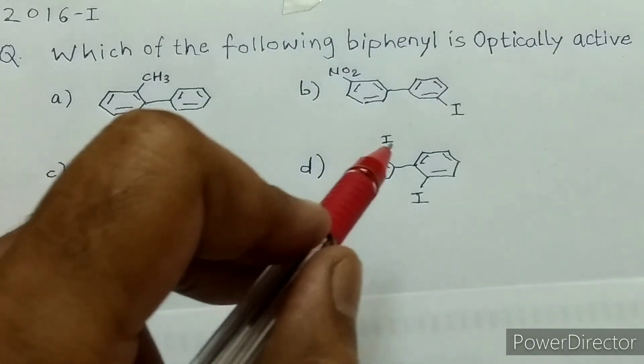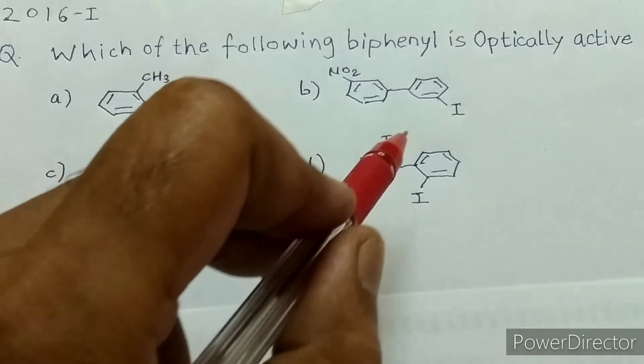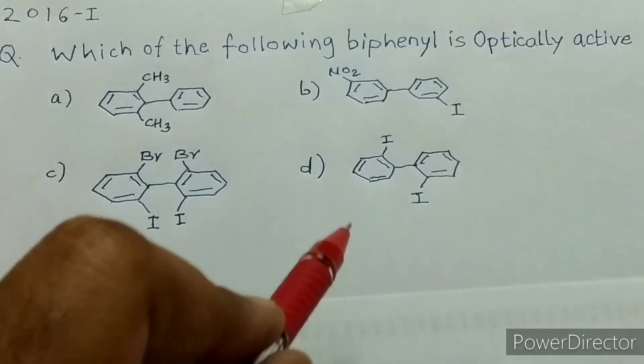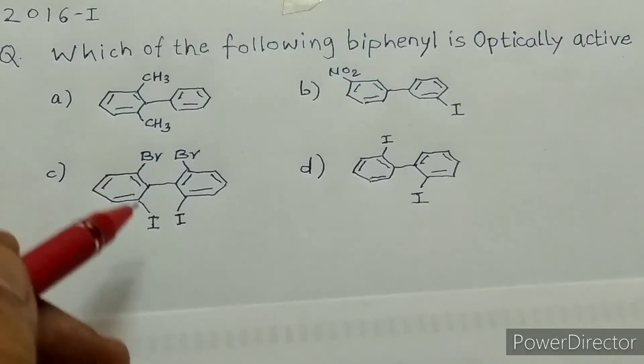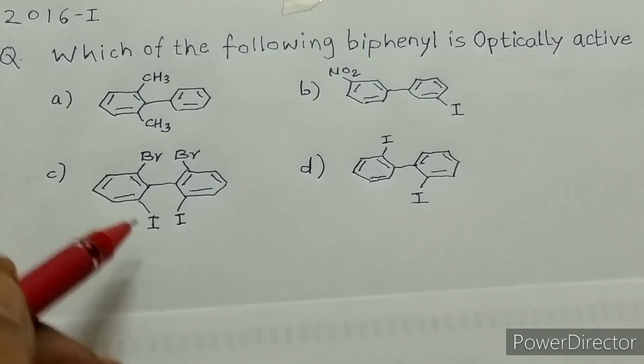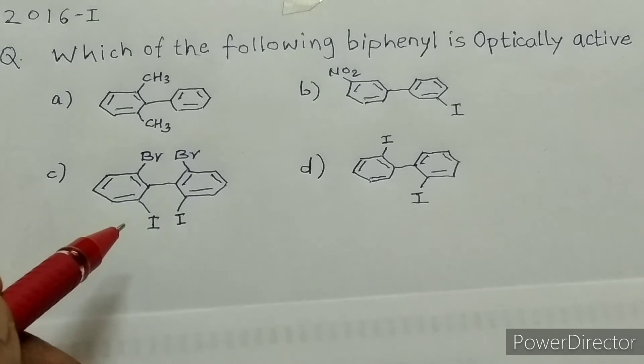In case of option D, there is only one substitution present on the ortho position. If you compare option C and D, in option C, the bulkier groups present on the ortho positions make the molecule non-planar and give it a non-superimposable mirror image.